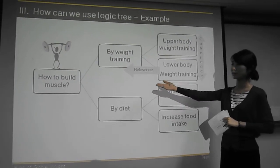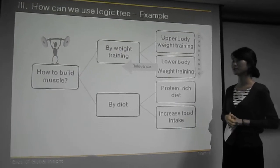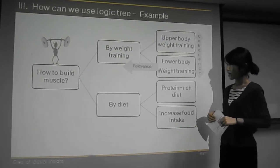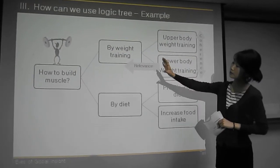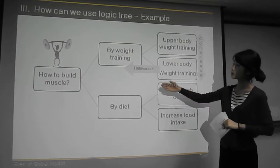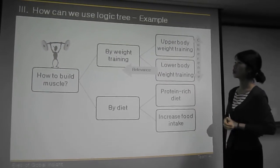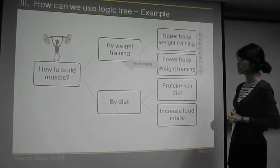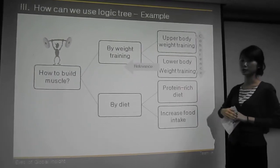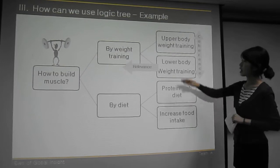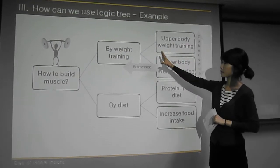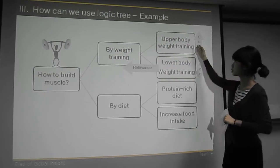For example, let's say we have that kind of issue: How to build muscles? And we can divide the problem into two sub-issues. It is by weight training and by diet. It seems like they are mutually exclusive.